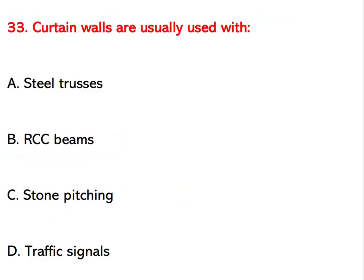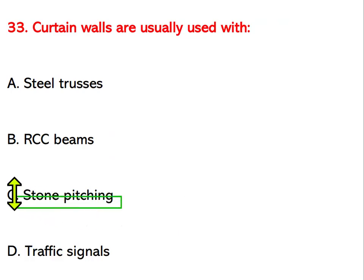Curtain walls are usually used with which element? Options are steel trusses, RCC beams, stone pitching, or traffic signals. The right answer is stone pitching.